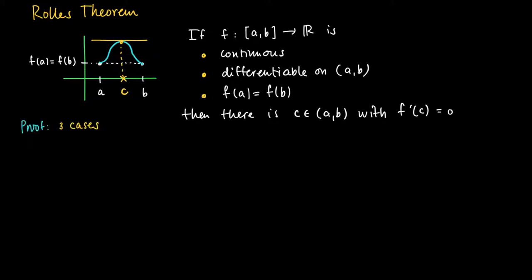So a proof works as follows. We have three cases. First we treat the case where f is a constant. Suppose f is a constant. But then it's easy, right? Because then basically the graph of the function is a horizontal line. So the derivative in any point in between a and b is zero. So we could also choose the middle of the interval. So pick c in between a and b which is half times a plus half times b. Then we're sure that the derivative in c equals zero.